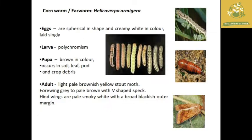The first maize pest is the cornworm, also called earworm. The scientific name is Helicoverpa armigera. As already mentioned, Helicoverpa armigera is a polyphagous pest with a wide variety of hosts. The eggs are spherical in shape, creamy white in color, and laid singly. The larva shows polychromatism. The pupa is brown in color and occurs in soil, leaf, pot, or crop debris. The adult moth is light pale yellowish-brownish with a stout body. The forewing has a V-shaped speck marking and the hindwing is pale smoky with a blackish outer margin border.